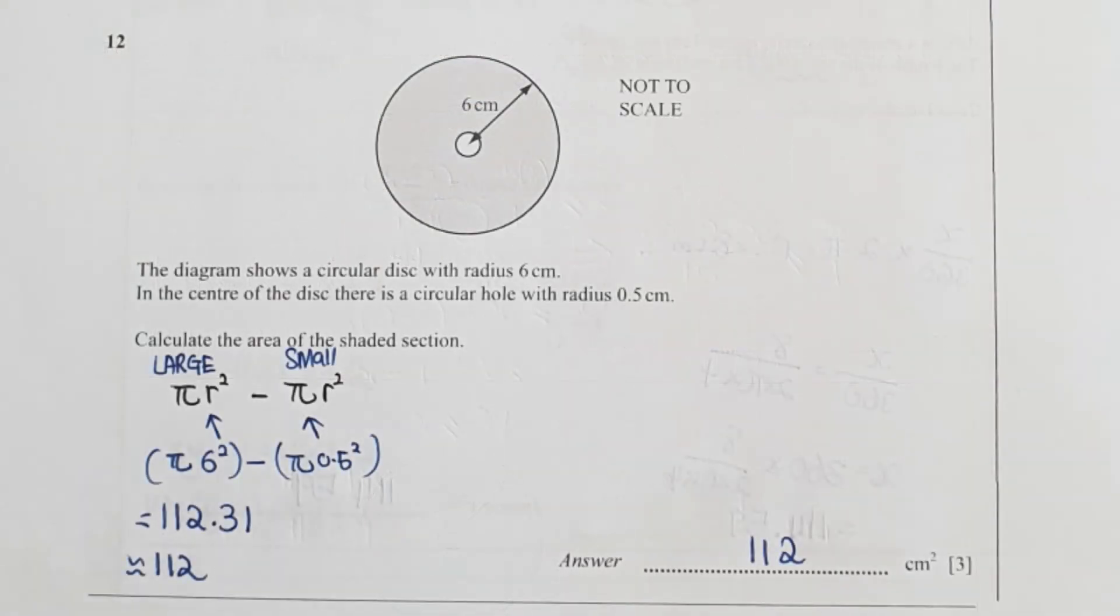For question 12, they gave you the radius of the bigger circle as 6 and the smaller one is 0.5. So large minus the small one, you will get your final result as 112.